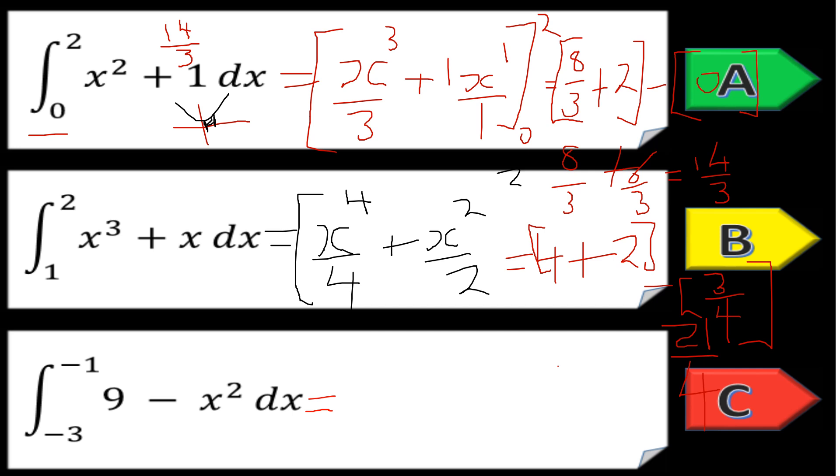We've got the integral of nine minus x squared dx from minus three to minus one. Again, we're going to add one to the power, so now we'll get nine x, then we've got minus x cubed, or subtract x cubed over three.